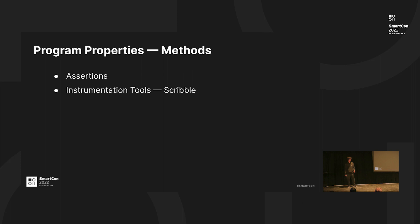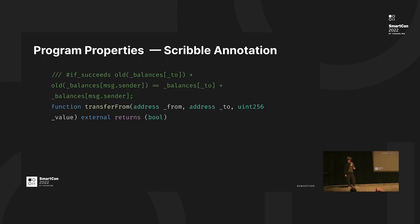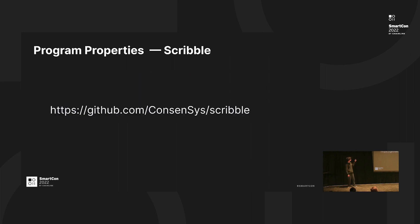A much cleaner way is to use instrumentation tools such as Scribble. This is how instrumentation with Scribble works: you can annotate a program property with comments. In this case, the 'if succeeds' keyword denotes that if the transfer-from transaction succeeds, then the following condition holds — the old balance of sender plus receiver equals the new balance of sender plus receiver. It's basically the balance sum invariant. Once you have such an annotation, you can directly run Scribble and it auto-generates the assertions for you. For more information about Scribble, you can check the GitHub link.